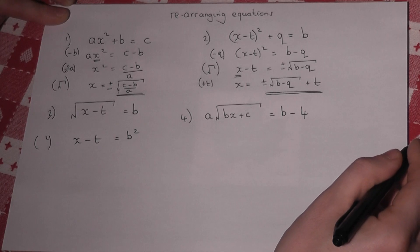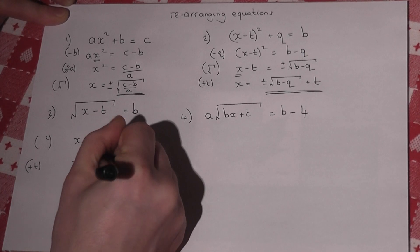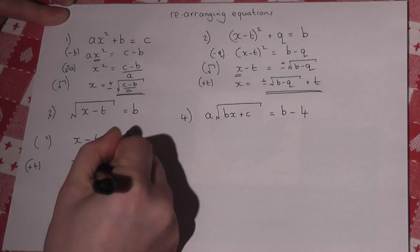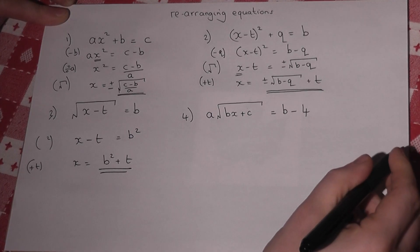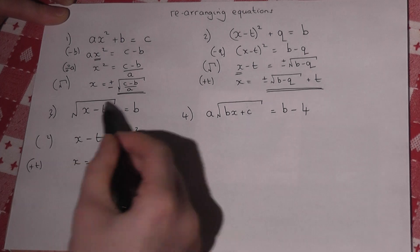So we're almost there. I want x equals, so if I add t across, I get x equals b squared plus t. So when we get down to the final square root, we square, to cancel it out.